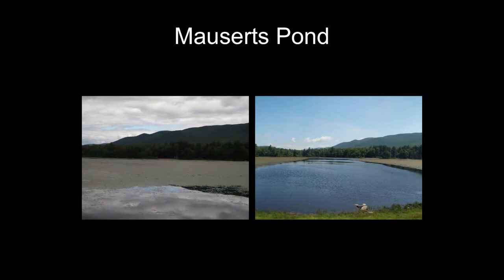Here's a good example of that. This is Mossert's Pond out in Clarksburg State Forest, way in the northwest corner of the state. This was a completely open water lake — we have a swimming beach, campgrounds, canoeing, fishing, good recreational use, good fishery. Over the years, that picture on the left — those are all native plants, primarily water shield, which is similar to a water lily, a floating leaf plant, with some water lilies mixed in.